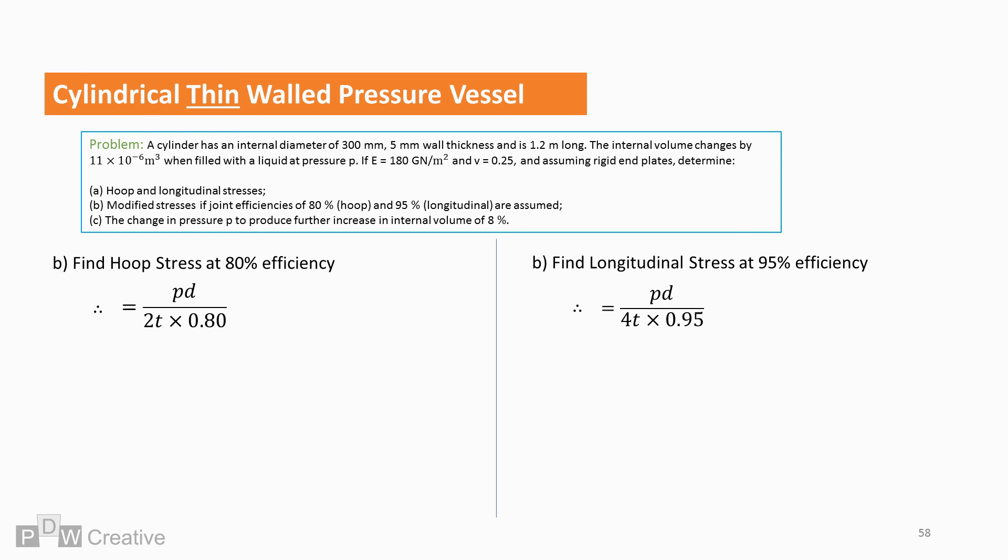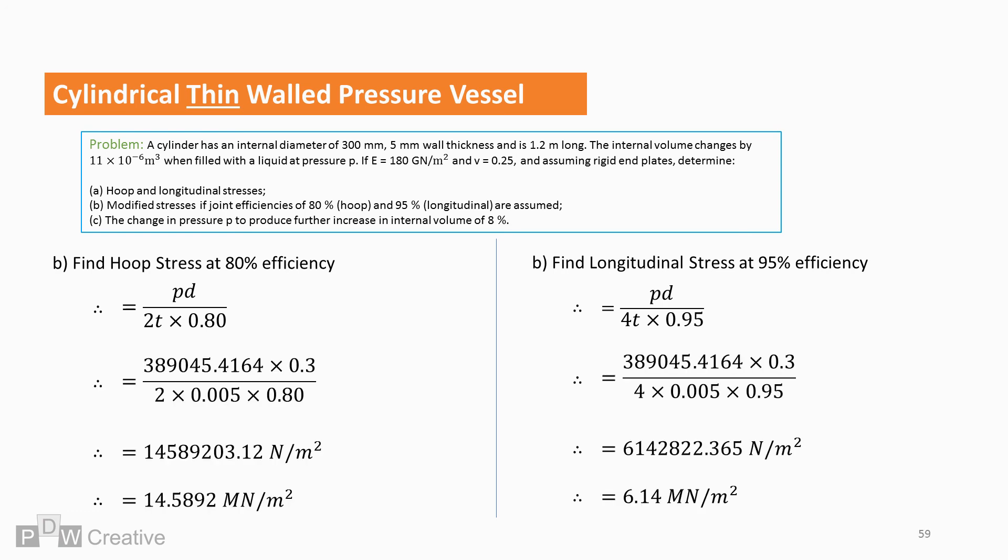For section B, we need to apply efficiencies. We can add the percentages to the base of each fraction. And this gives us a modified value for both hoop and axial stresses. Here, material or mechanical deficiencies at joints in another scenario could lead to axial failure. But this could only occur if the axial efficiency was less than half of hoop efficiency.